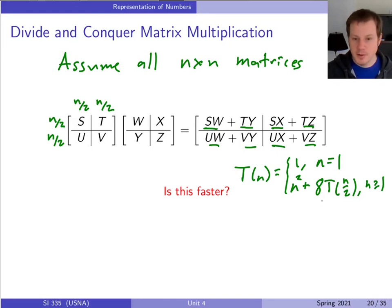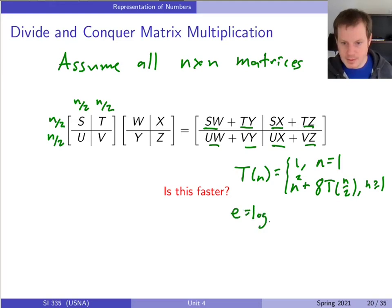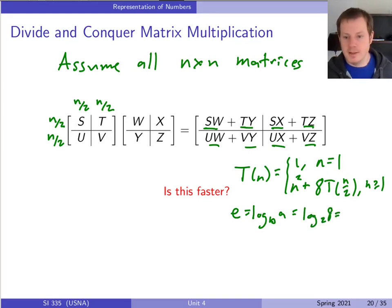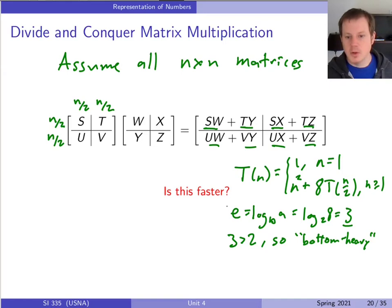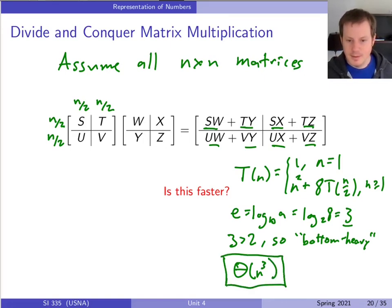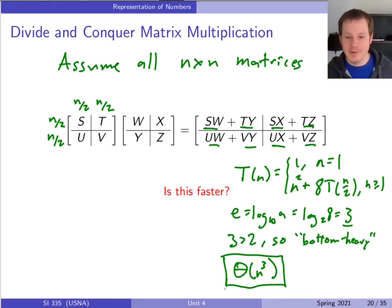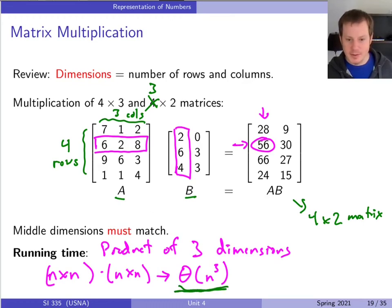We haven't seen exactly this recurrence before, but we can apply the master method. E is log base B of A, which is log base two of eight — and since eight is two cubed, E equals three. Comparing to the exponent of N, which is two: three is bigger than two, so this is bottom heavy. That means the total cost is big theta of N to the E, which is big theta of N cubed — the same as the standard algorithm.